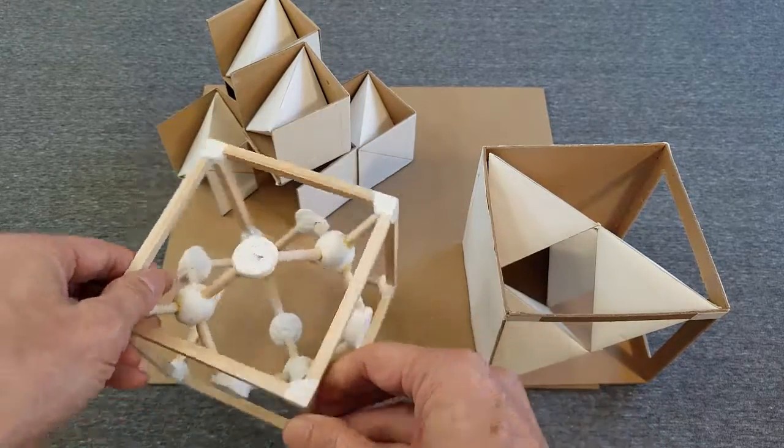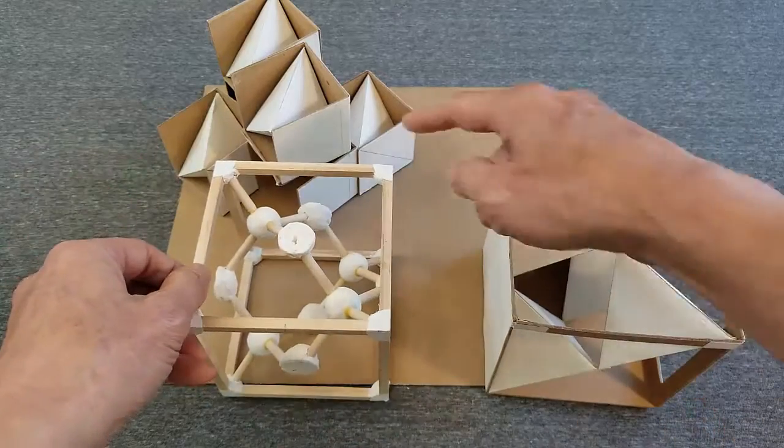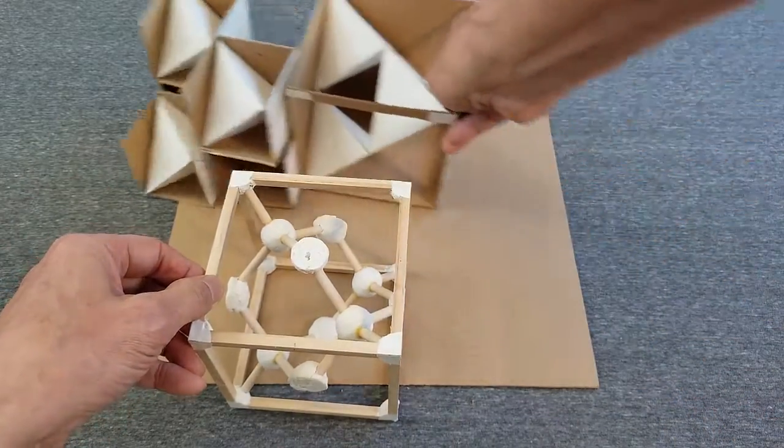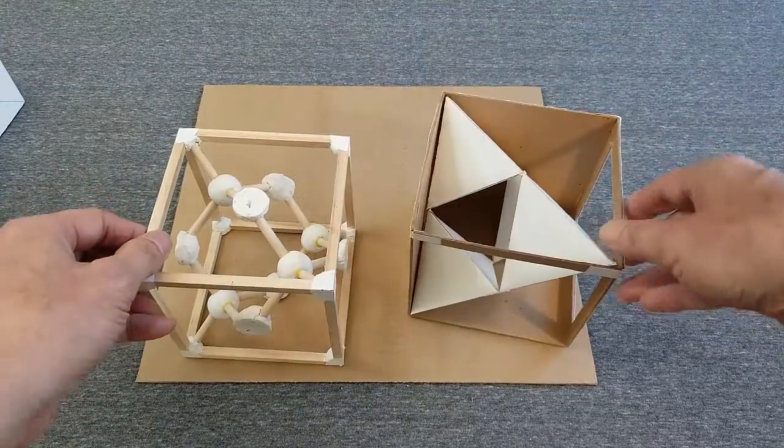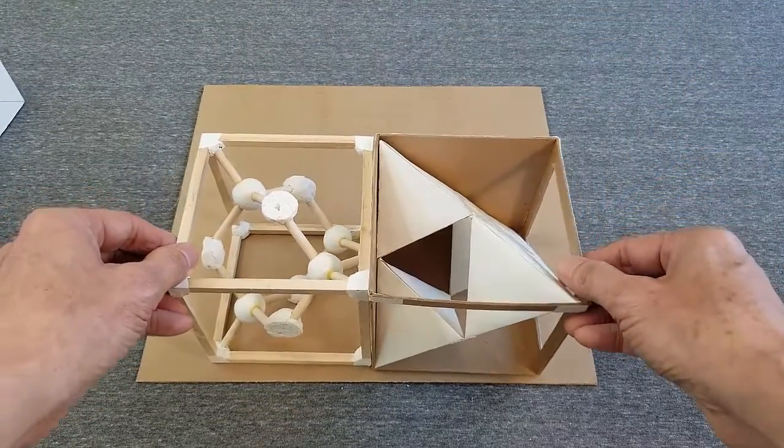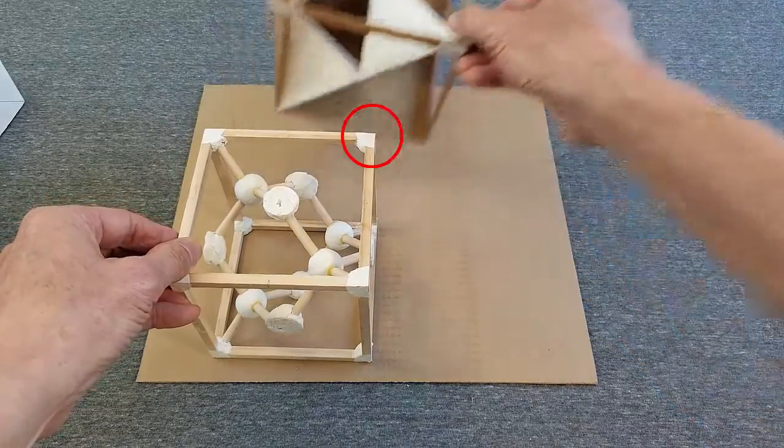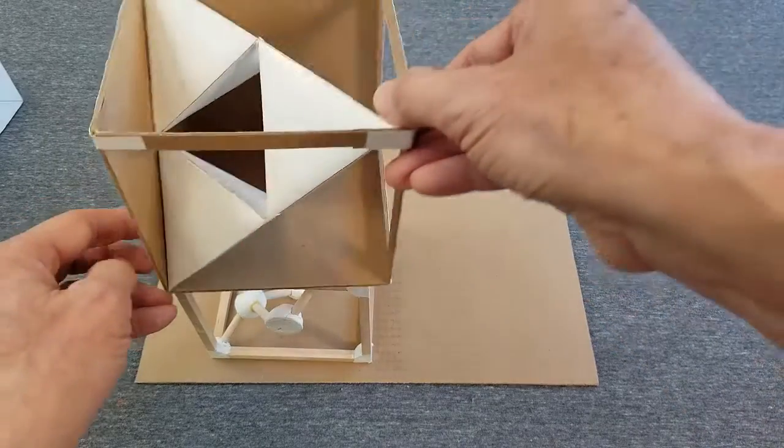Some corners have an atom without any connections, for example, here. This atom's connections are in four adjacent unit cells that meet at the same corner. This one, this one, this one, and this one.